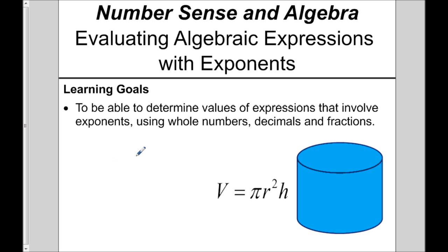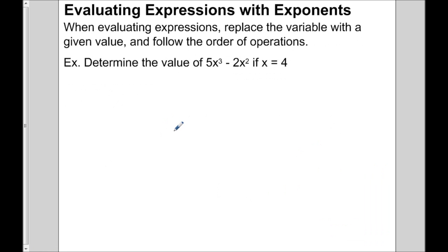An example of an algebraic expression with exponents is the volume of a cylinder — here we have an exponent. When we're using formulas such as this, all we do is replace the variables with the values that we know. So if we knew the radius and the height, we would substitute in. The same idea applies when we have variables with exponents in any expression: we replace the variable with a given value and then follow order of operations.